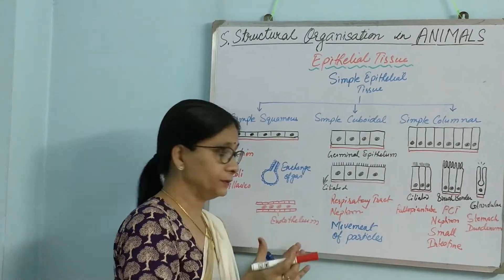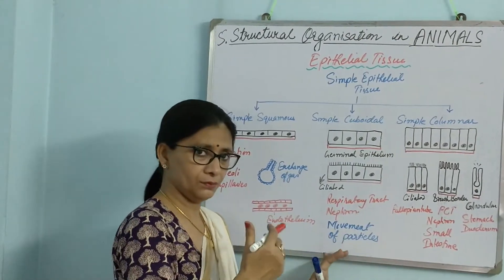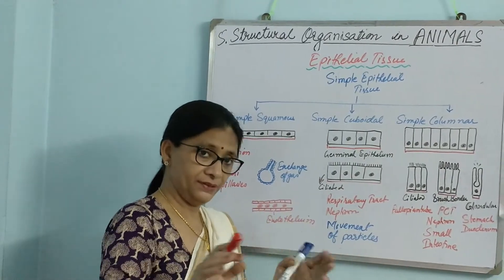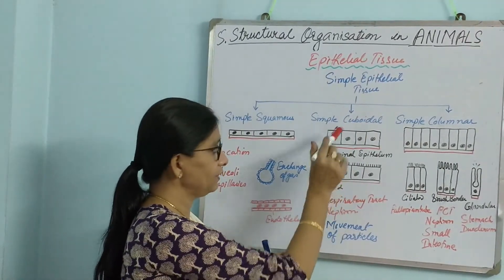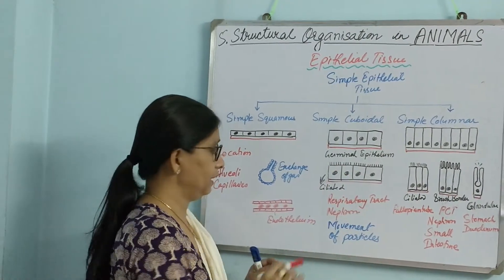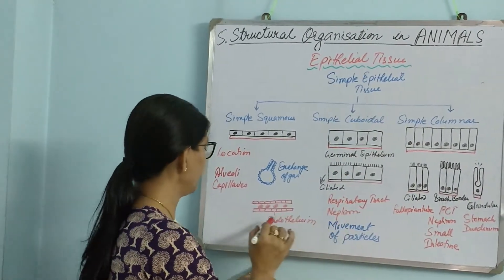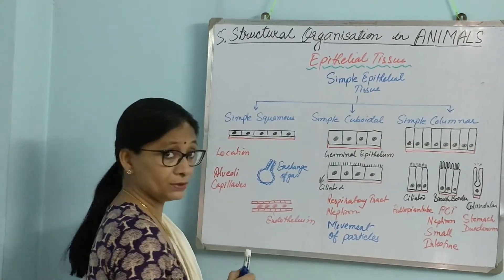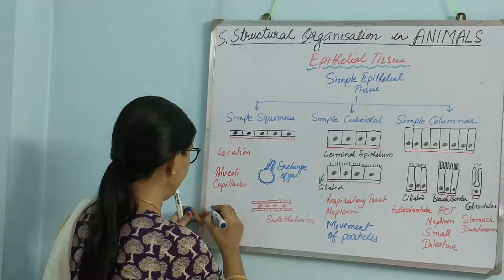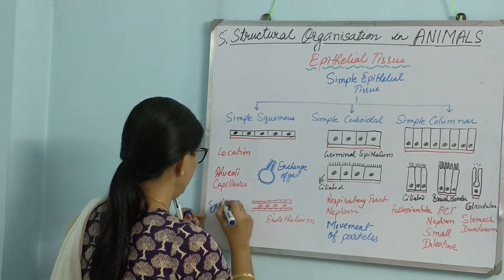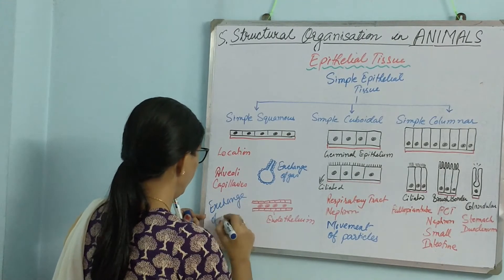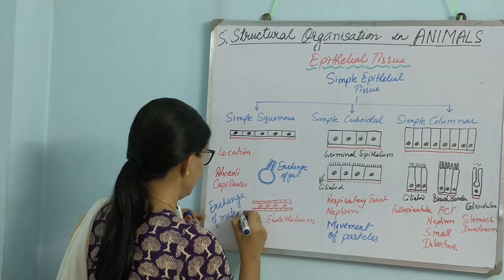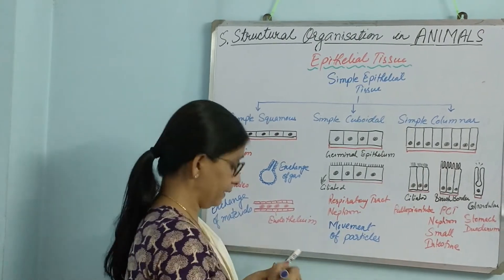In the case of the nephron, the liquid — the filtrate — has to be moved. So here also we have ciliated cuboidal epithelium, and the function is movement of particles. The function of simple squamous was exchange of material — it can be gas, food, or other substances. Here the function is movement of particles.